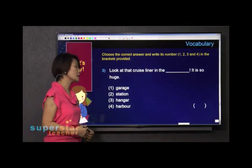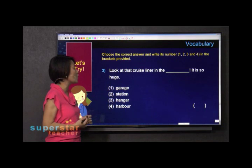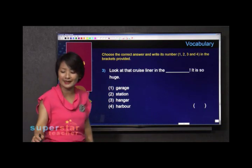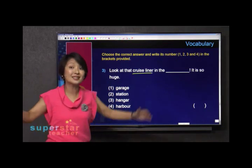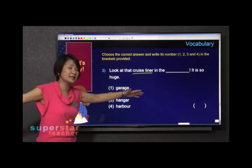Talking about question three. Look at the cruise liner in the blank, it is so huge. What is a cruise liner? A cruise liner is a ship, is a big ship. So look at the ship in the what.